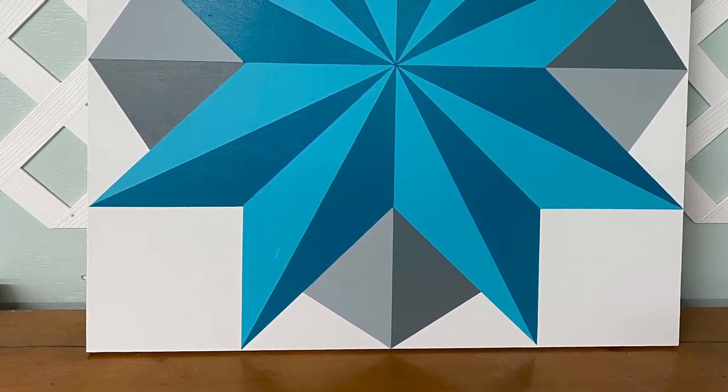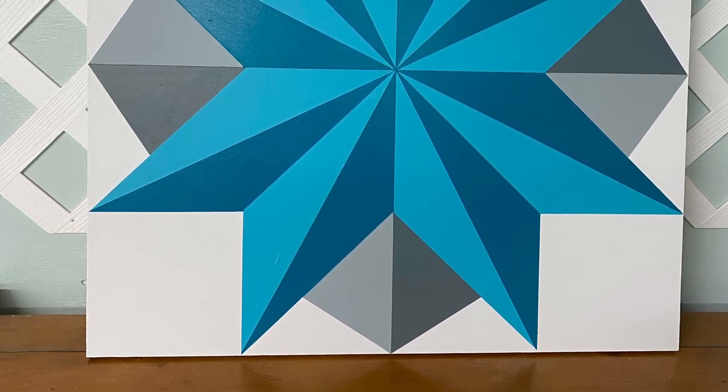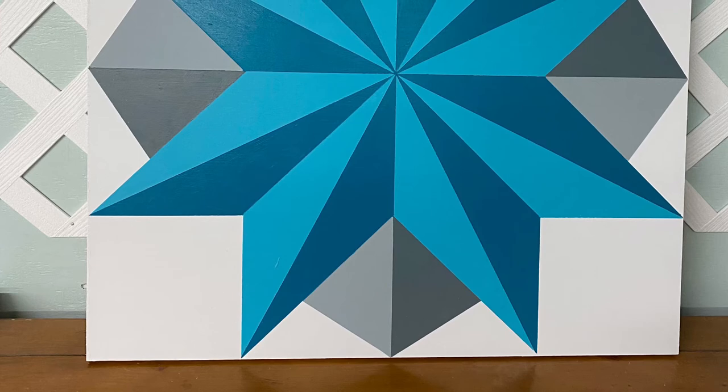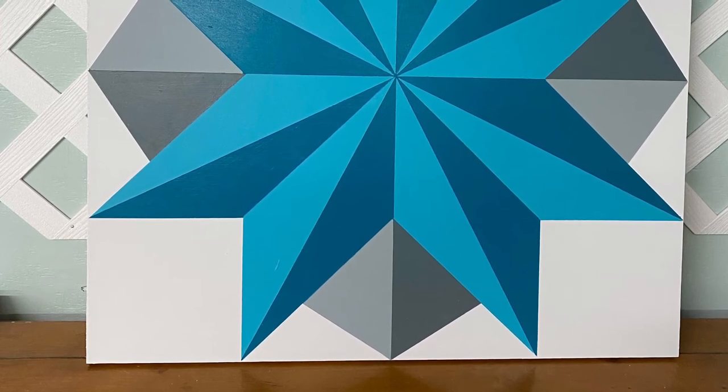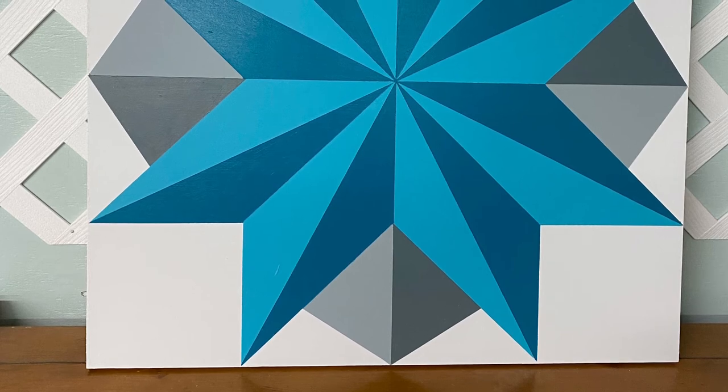So you only need two colors for this one plus your white and it's very easy to make. It takes a little time taping it up, but you'll have a beautiful, beautiful barn quilt when we're through.